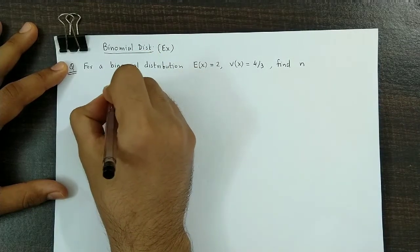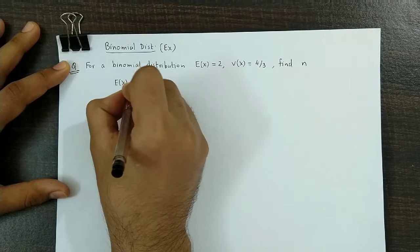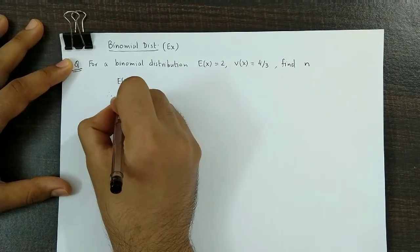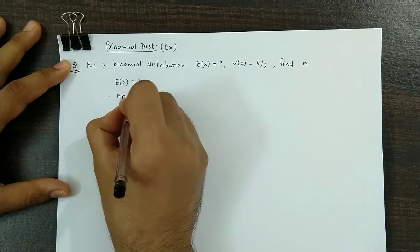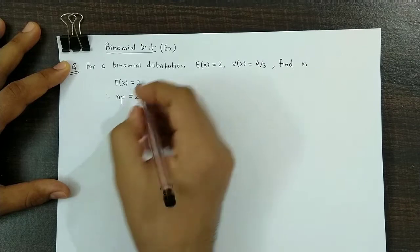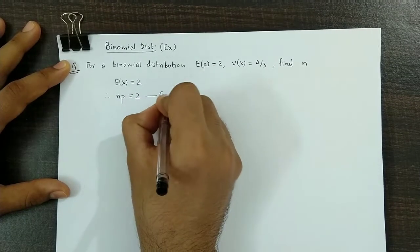As E(X) is equal to 2, that is mean is equal to 2, we could say N times P is equal to 2, because E(X) is given by N into P. So this is equation 1.